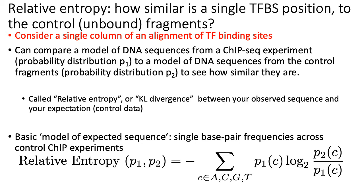The difference between relative entropy and entropy is that relative entropy also requires a model of the control fragments, which I'll call P2. We're going to use a simple model where, across all of the control fragments pulled down by the control experiment in ChIP-seq, we calculate the frequency of how often we saw each individual base — A, C, G, or T — across all the control fragments. Both P1 and P2 give us four numbers representing the frequencies or probabilities of seeing each of the four bases.